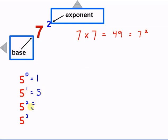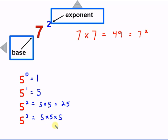Then we have 5 to the second power, which is 5 times 5, and 5 times 5 is equal to 25. 5 to the third power is 5 times 5 times 5. If we had 5 to the 4th power, we would have 5 times 5 times 5 times 5. And 5 times 5 times 5 is 125.